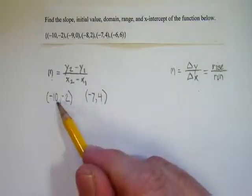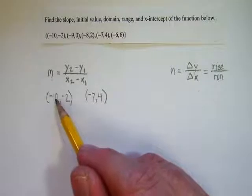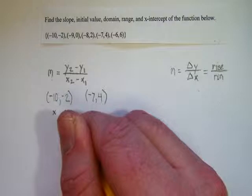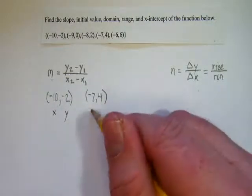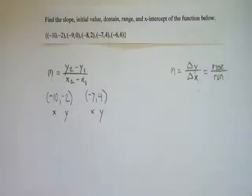Now one thing to remember is that when I have an ordered pair like this, the first number in the ordered pair represents the domain, which we call x, and the second represents the range, which we represent with y. And over here, it's the same thing. Our first number is an x value. Our second number is a y value.